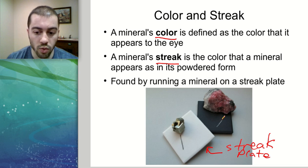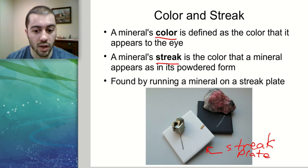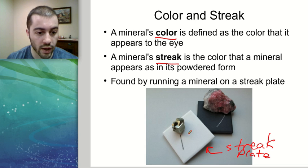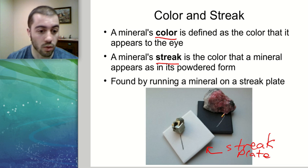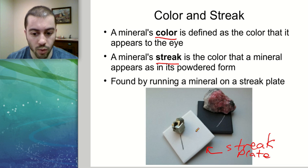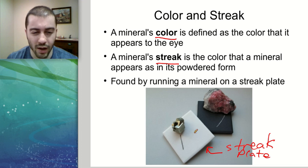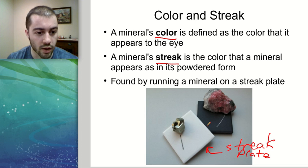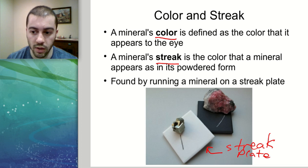Streak plates come in two colors — a white streak plate for darker colored streaks, and a black streak plate for lighter colored streaks. If you were streaking a mineral on the white plate and it had a white streak, it'd be hard to see. Mostly, we'll be using the white streak plates.